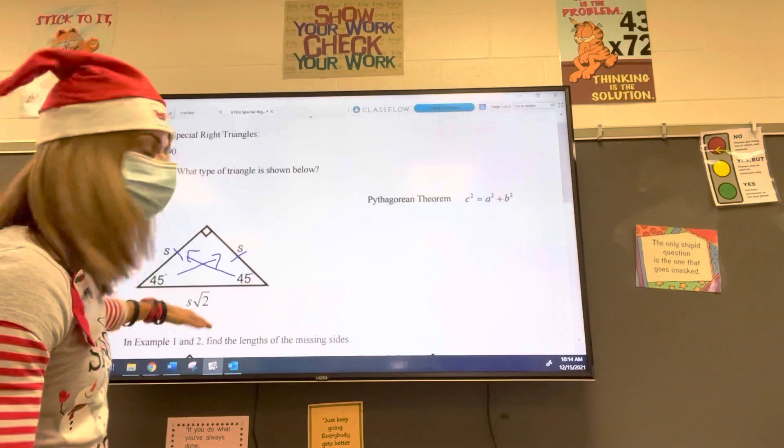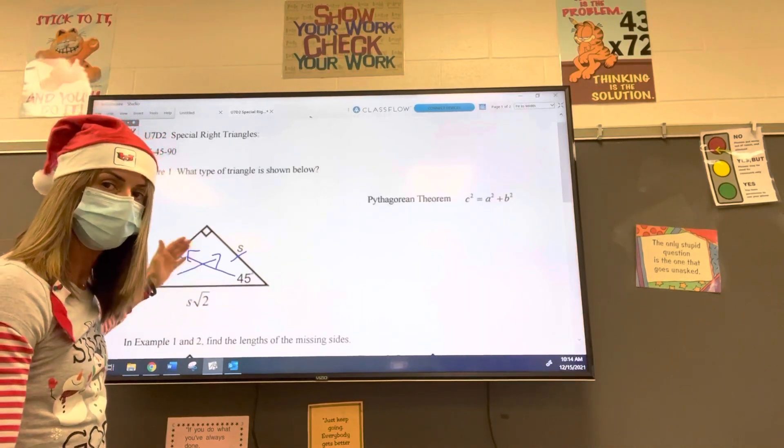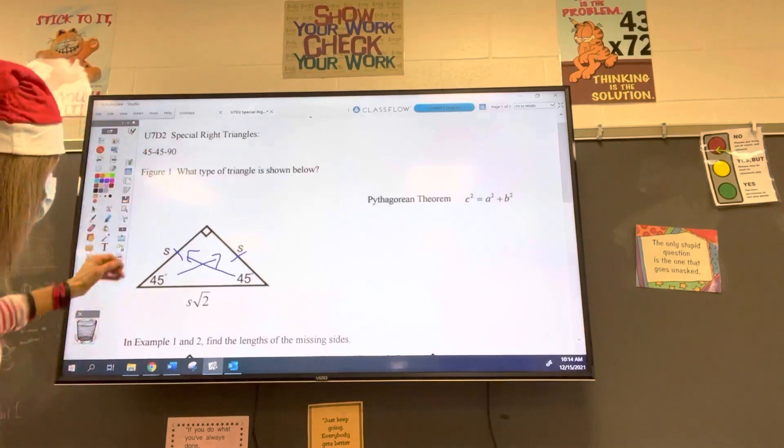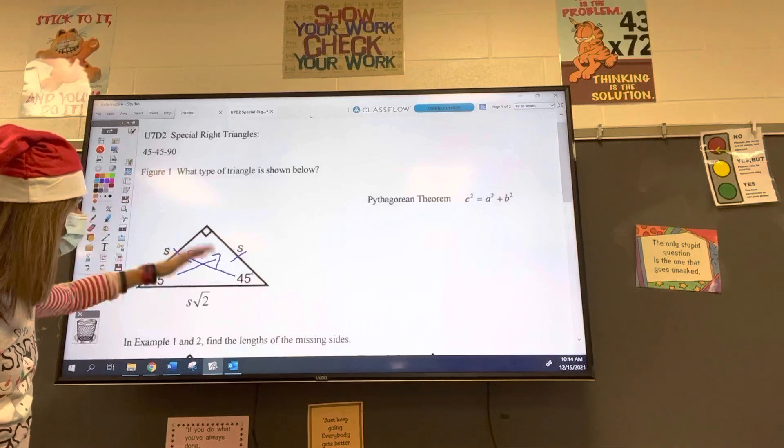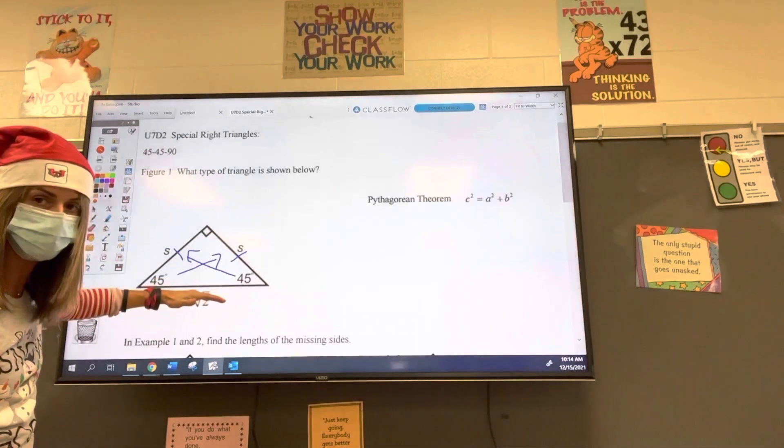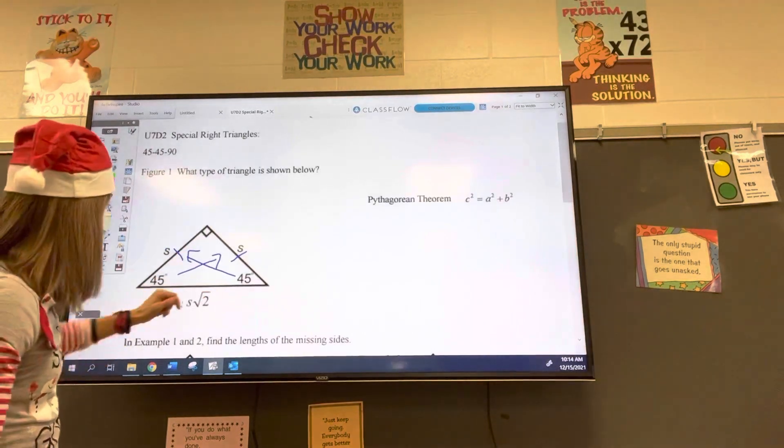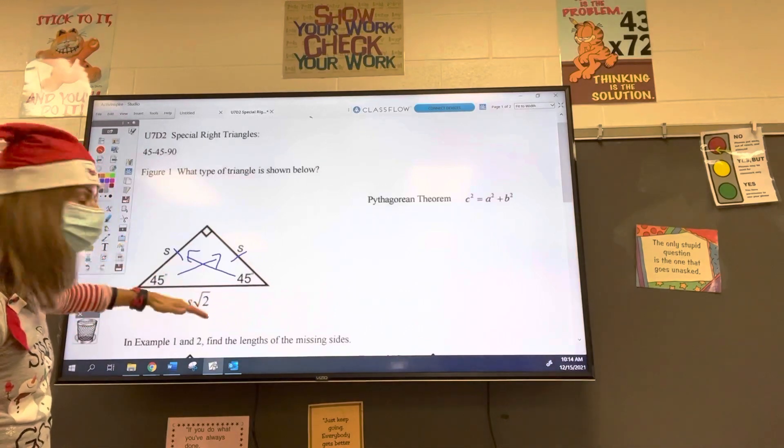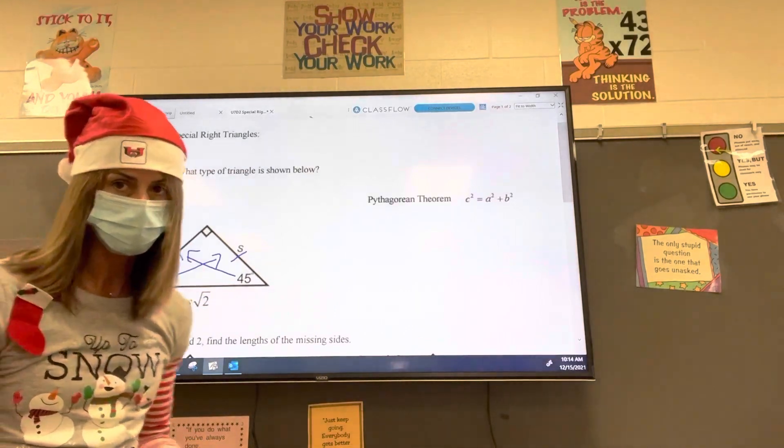Sometimes though, they give you the hypotenuse and ask you to find the length of the side. So if you're going from the length of the side to the hypotenuse, you're multiplying by the square root of two. And if you're going from the hypotenuse to the side, you are dividing by the square root of two. We're going to do both types of examples today.